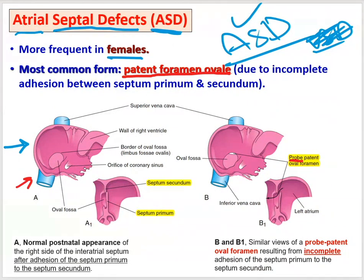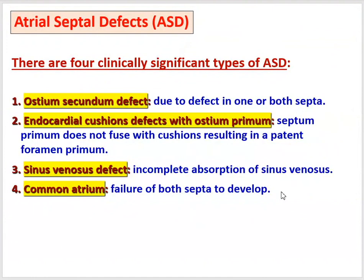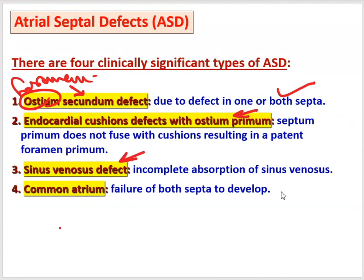This is the most common form of atrial septal defect — patent foramen ovale. The cause is mainly incomplete adhesion between the septum primum and septum secundum. This incomplete adhesion leads to a shift of blood from left to right. However, this is not the only type of atrial septal defect — there are four types in total.